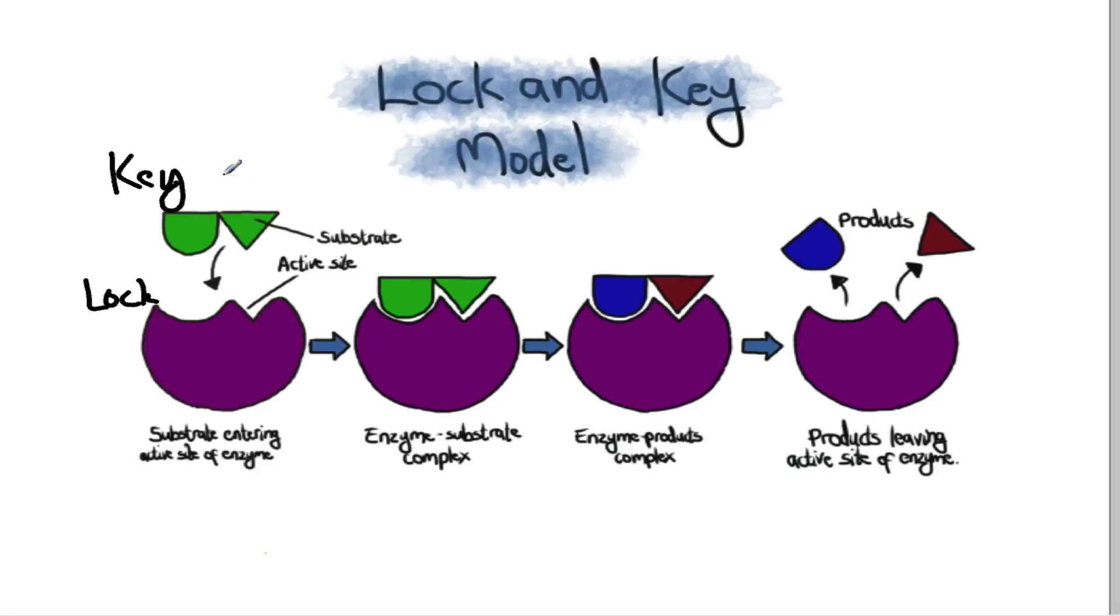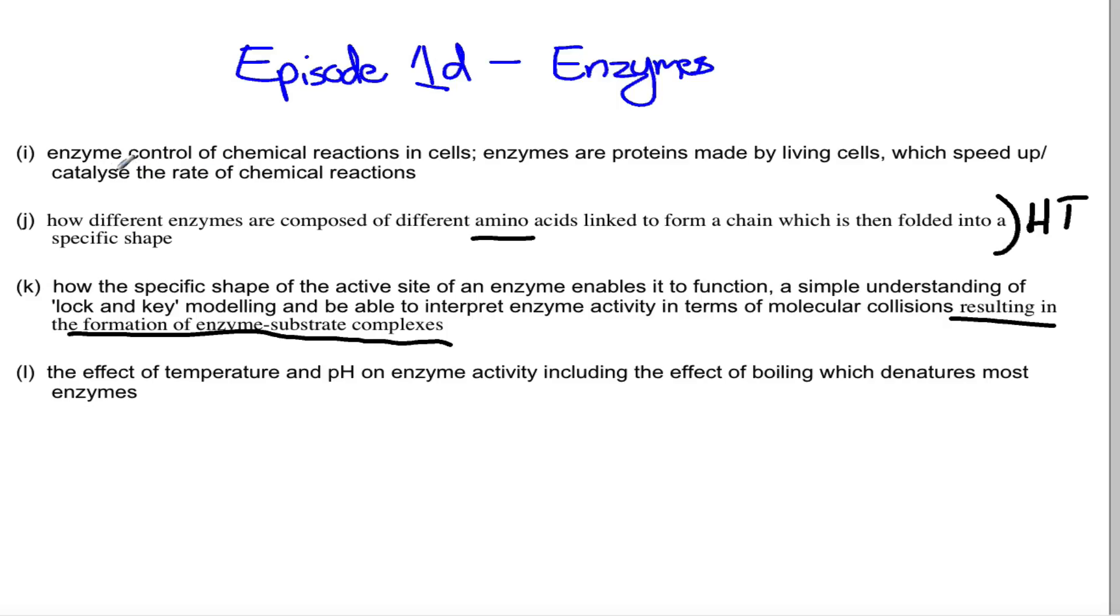Let's double check back with the specification. Enzyme control of chemical reactions in cells - that's simply saying that enzymes are what control those reactions, that they're made of proteins made by living cells which speed up or catalyze the rate of chemical reactions. Different enzymes are composed of different amino acids, so if I was to change one of those beads I get a different order of amino acids which means I get a different final structure when it's actually folded into shape.